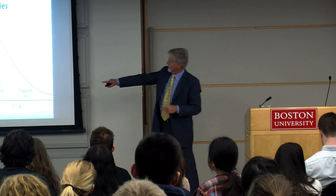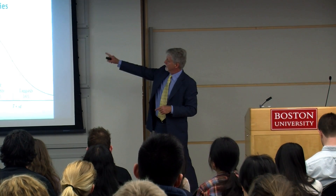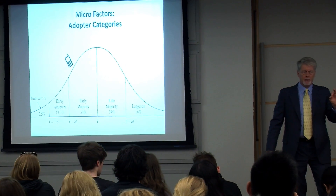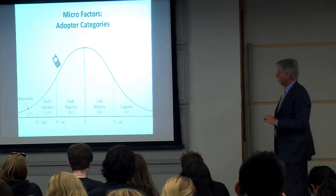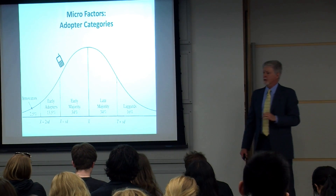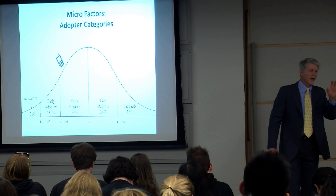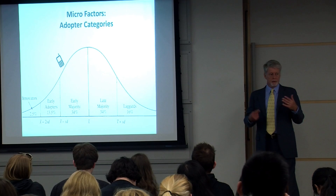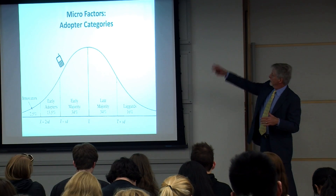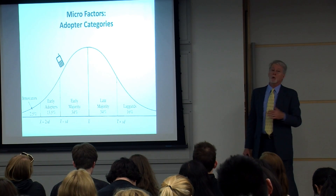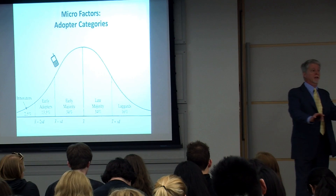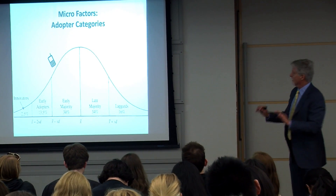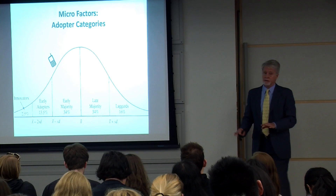For most innovations there's this kind of curve: the innovators are the very early adopters, then early adopters who tend to have more education; then the early majority when the market takes off and adoption really accelerates; the late majority who will eventually adopt once everything's been standardized and the price is down; and the laggards who may never adopt and are really resistant to change.